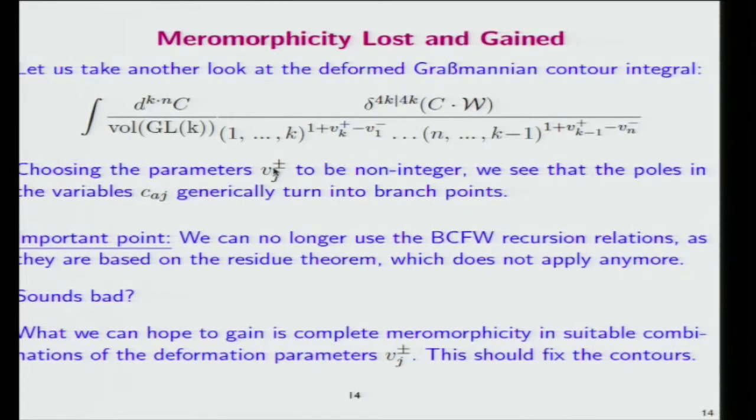This means you can no longer use a BCFW recursion relation because they are completely based on the residue theorem. At the same time, what you possibly gain here is that you get meromorphicity in the spectral parameters. In integrable models, you only have elastic scattering, so you only have poles. The hope is that you get complete meromorphicity in the spectral parameter, and that should help you to define your contours. That's the idea.